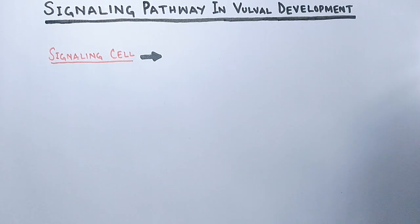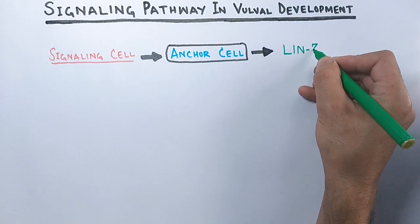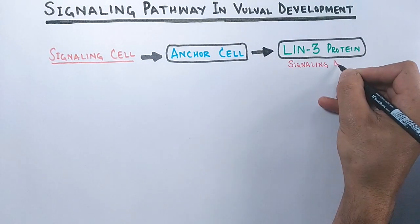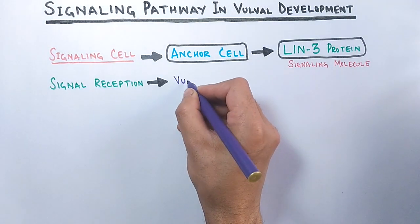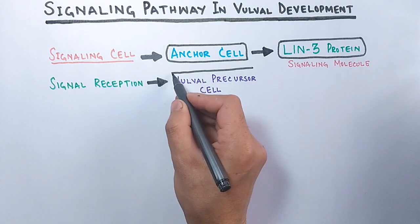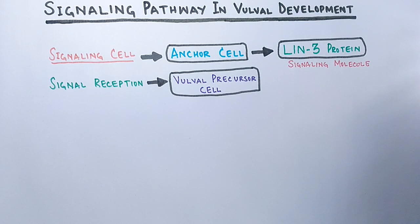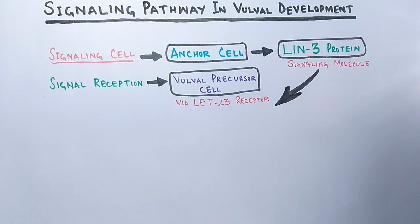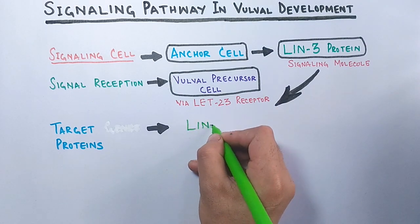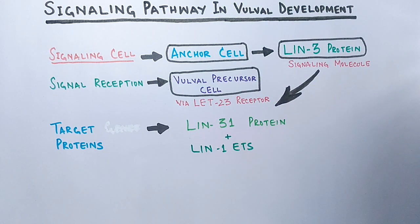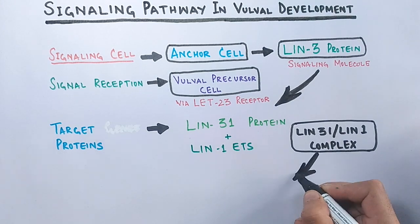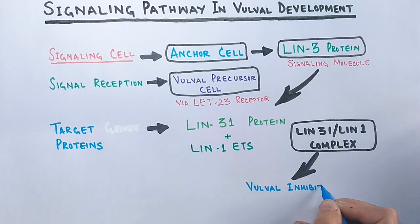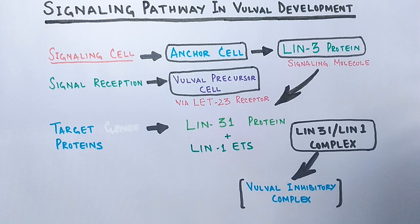In this signaling pathway, the signaling cell is the anchor cell which secretes the lin-3 protein as a signaling molecule. Signal reception is by the vulval precursor cell, which receives the lin-3 inductive signal through its let-23 receptor. The target proteins are lin-31 protein plus lin-1 ETS protein. These proteins exist in a complex form, the lin-31 lin-1 ETS complex, which is the vulval inhibitory complex. This complex stops the cell from becoming vulva. In simple words, just break down this complex and the cell will lead into vulval fate.